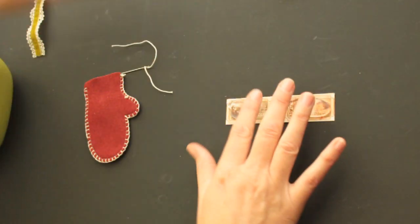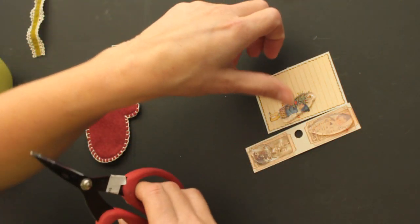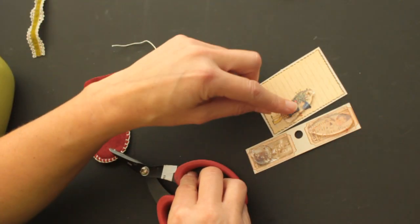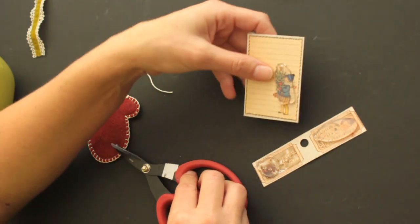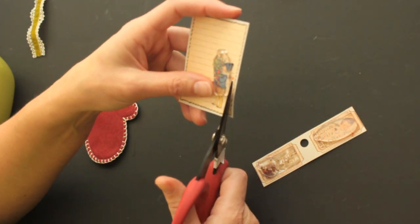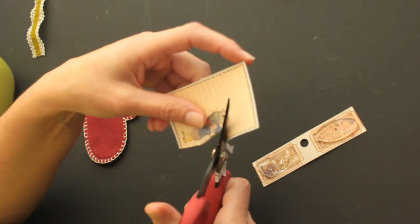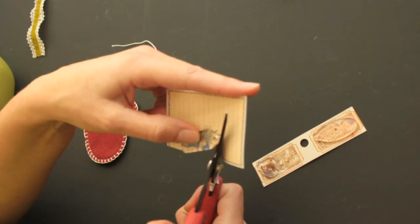To do that, I already used some Crafty Secrets Creative Scraps, the Christmas ones, and added glossy accent on my fragment pieces, and adhered them to the scrap. Now, all I have to do is cut those out.